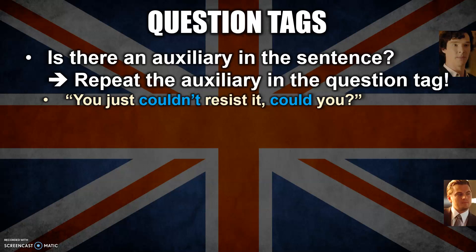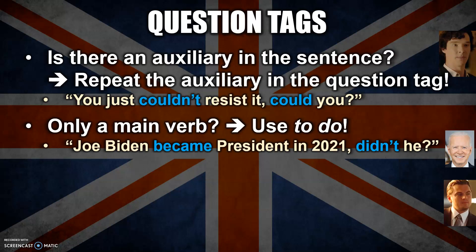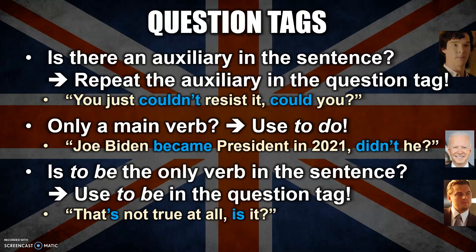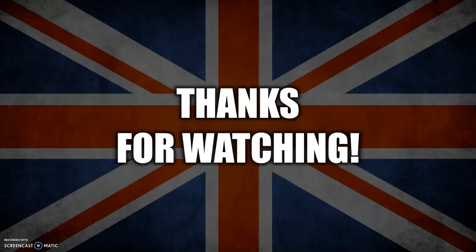If there is only a main verb without an auxiliary, then you use a form of 'to do'. For example: 'Joe Biden became president in 2021, didn't he?' And if 'to be' is the only verb in the sentence, then you use a form of 'to be' in the question tag. For example: 'That's not true at all, is it?' Well, that was it — thanks for watching!